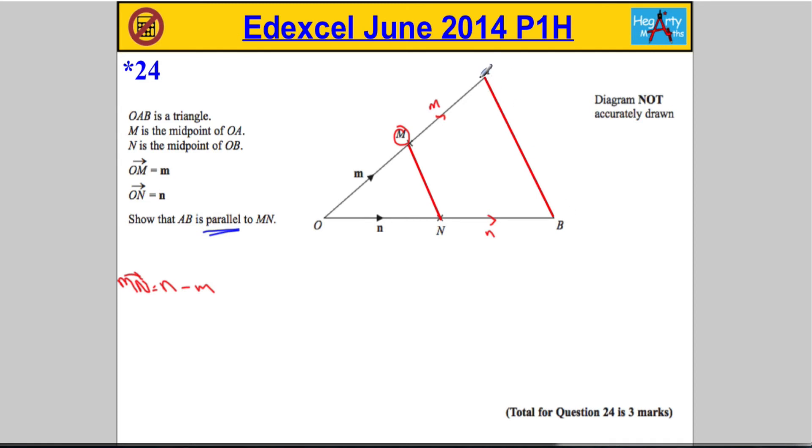What we can say now is, actually, to get from A to B, we could go minus 2m in that direction, and then go 2n in that direction.